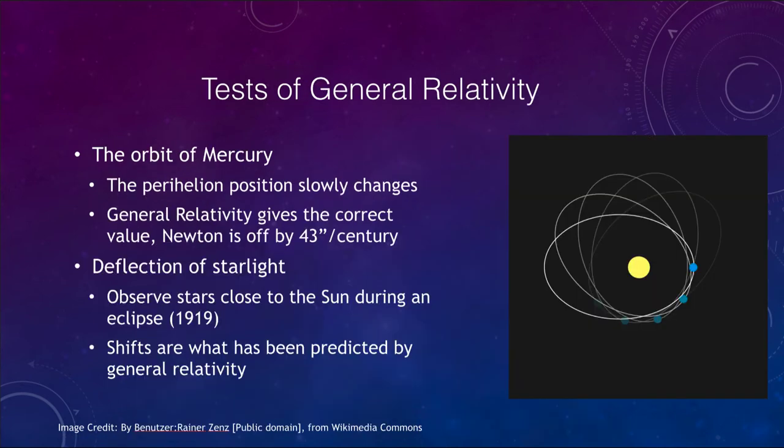Now one of those is the orbit of Mercury. One of the problems that Newton's theory had is that it could not predict the orbit of Mercury properly. In fact, it could not predict what we call the perihelion or closest approach. It slowly changes, so it would be here one approach, and then it moves a little bit the next one, and it's a little bit different the next one. It's constantly changing over time. Now general relativity predicts this, and so does Newton's law of gravitation. So both of them predict what we call the precession of the orbit of Mercury.